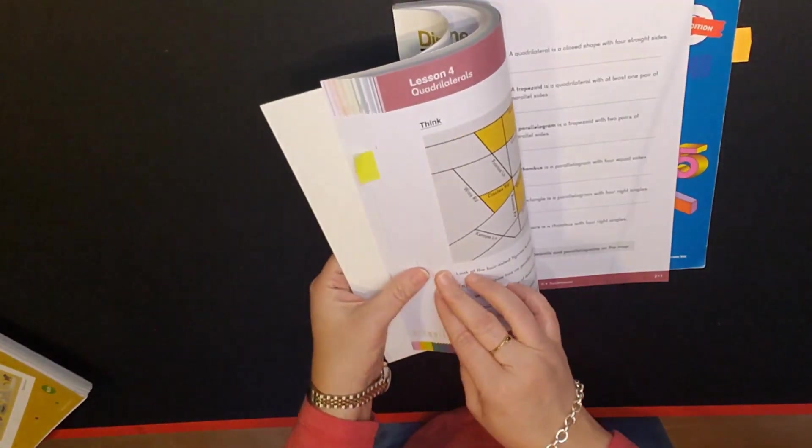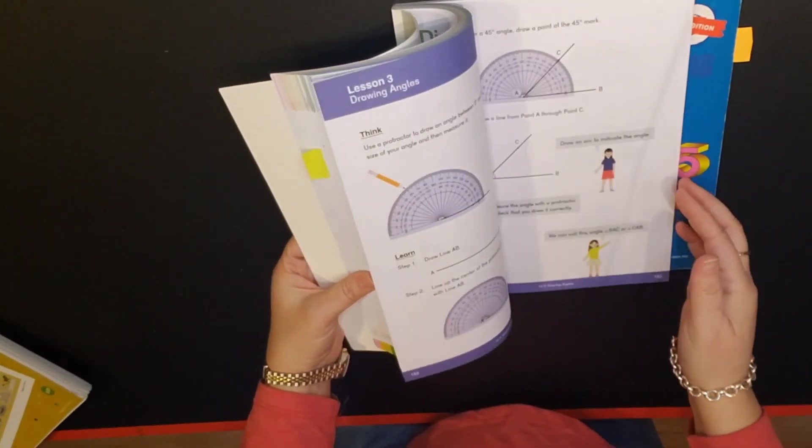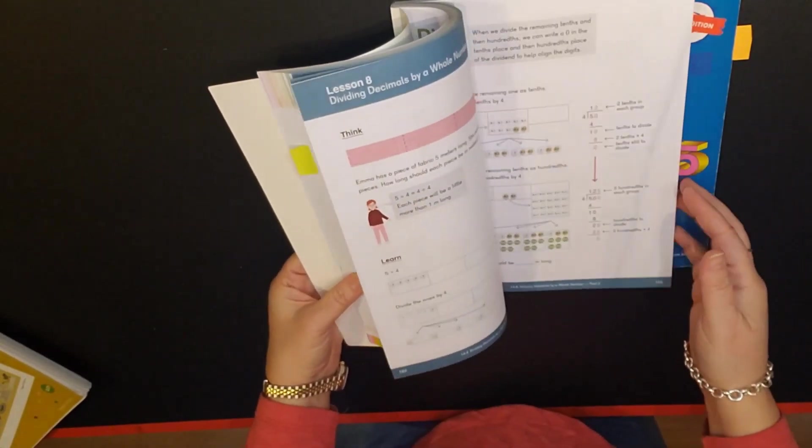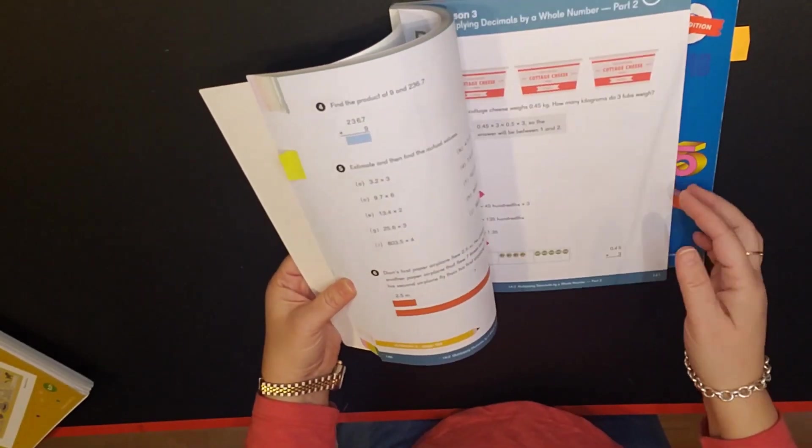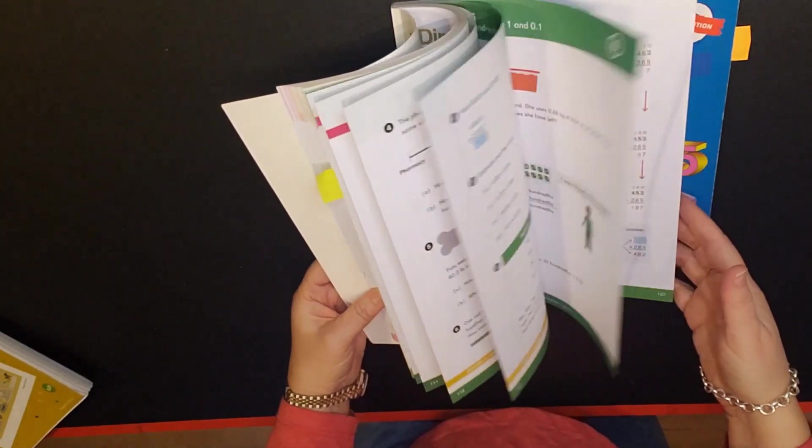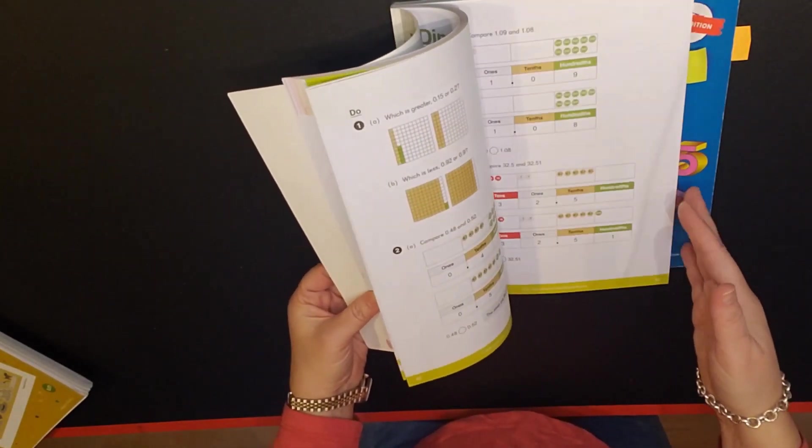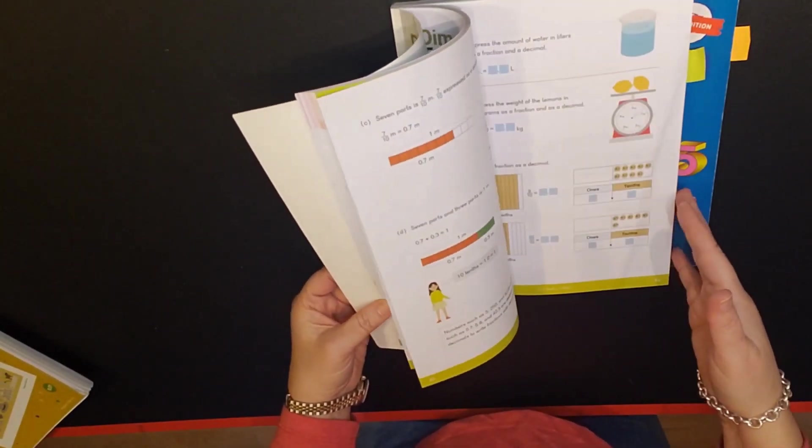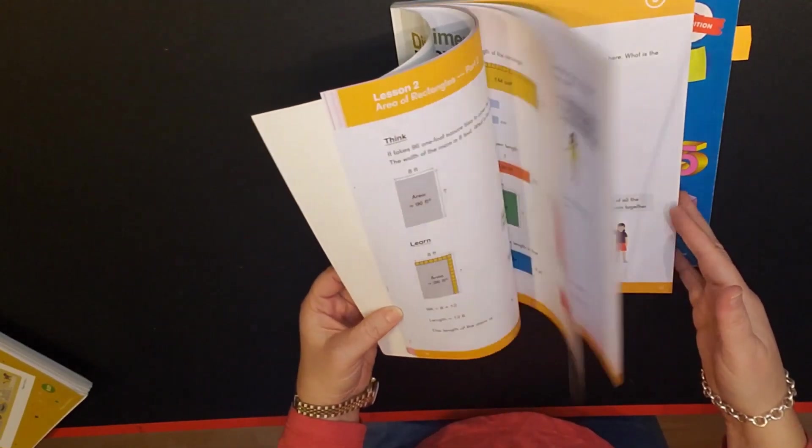Dimensions on the other hand is much more colorful. So you have more color, the pictures are larger, the pages aren't quite as crowded and so there is some of that spacing and aesthetic value to the dimensions math.